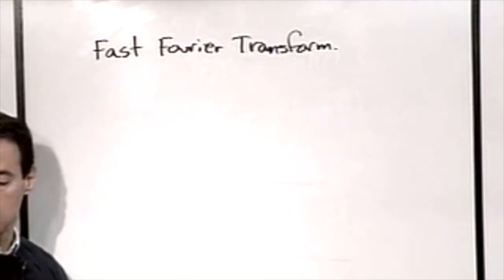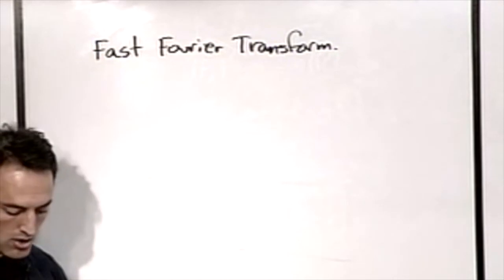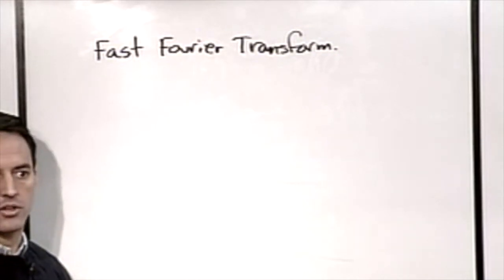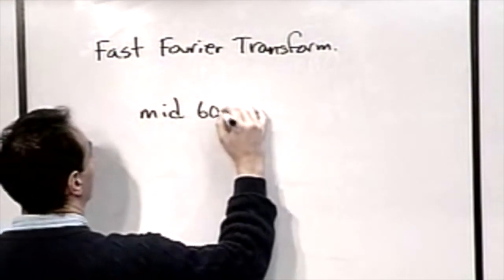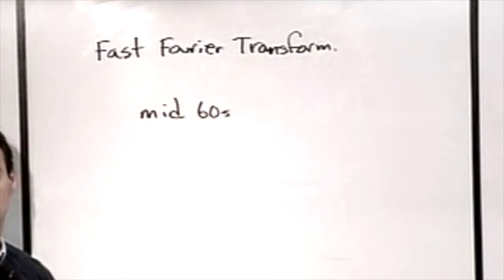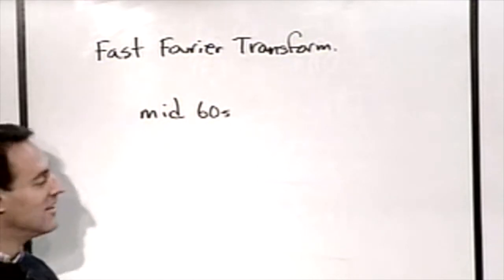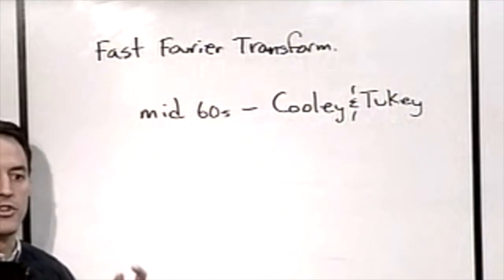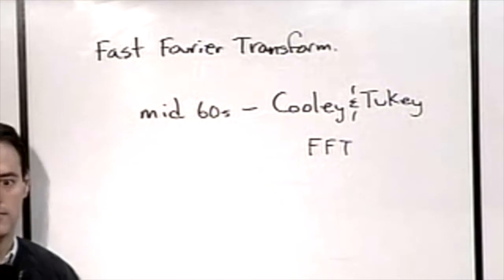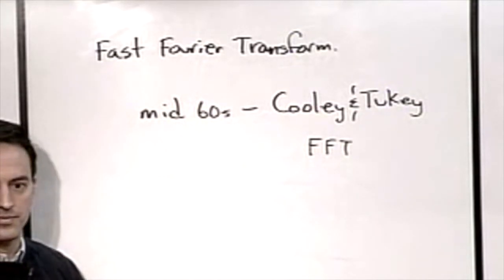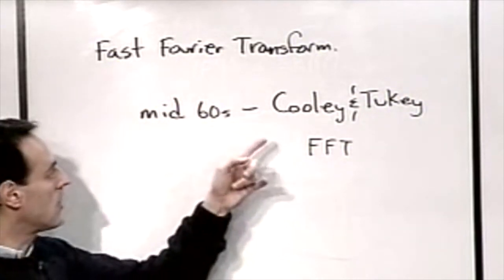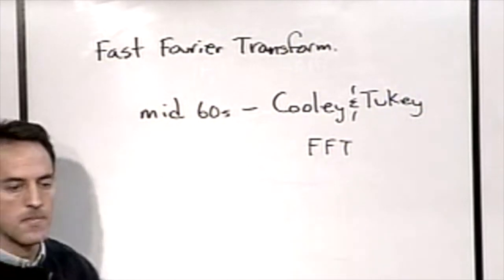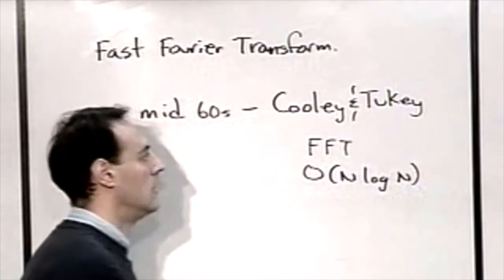If you want to use this technique computationally, you need to be able to take these transforms efficiently. Around the mid-1960s, Cooley and Tukey came up with the algorithm called the FFT — the fast Fourier transform — rated as one of the top ten algorithms of the last century. This allowed them to compute the Fourier transform in O(n log n) time.